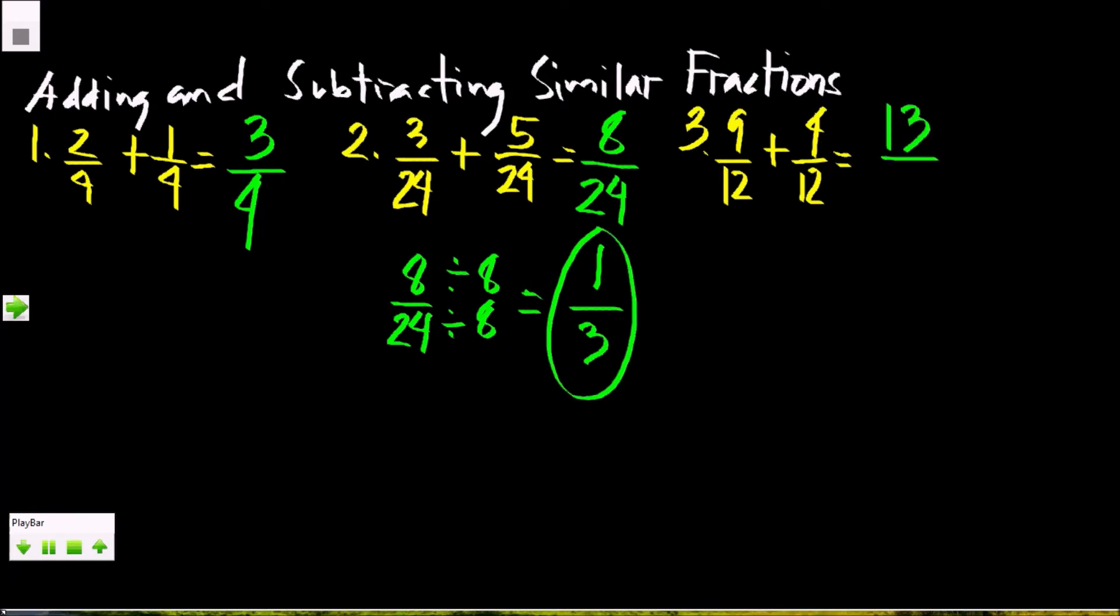9 plus 4 is 13, copy the denominator which is 12. In this case, the answer is improper fraction, so we need to change them into mixed numbers. How to change the mixed numbers? We are going to divide the numerator by the denominator. 13 divided by 12 is 1, so 13 minus 12 is 1.